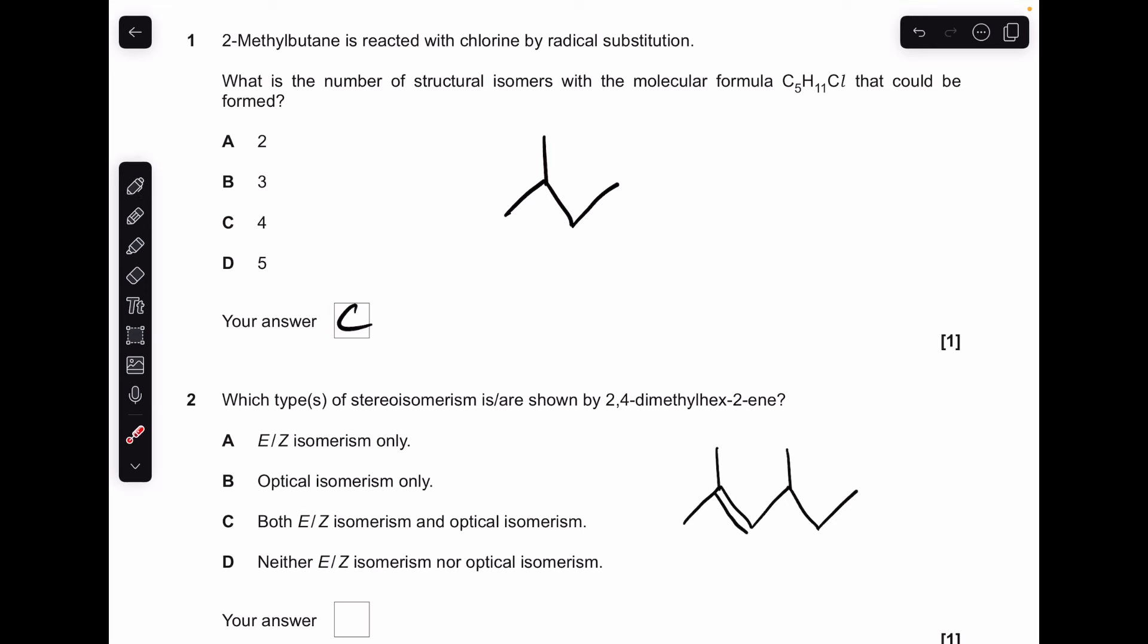Number 2, so there's the structure of 2,4-dimethylhex-2-ene. We've got to decide what type of stereoisomerism it can show. Can it show EZ? Well, it can't because this carbon of the C=C double bond has got the same group attached to it. We've got 2 methyl groups there. So the EZ options are out. Can it show optical isomerism? Yes, it can because that's a chiral carbon there. So optical only, so option B.